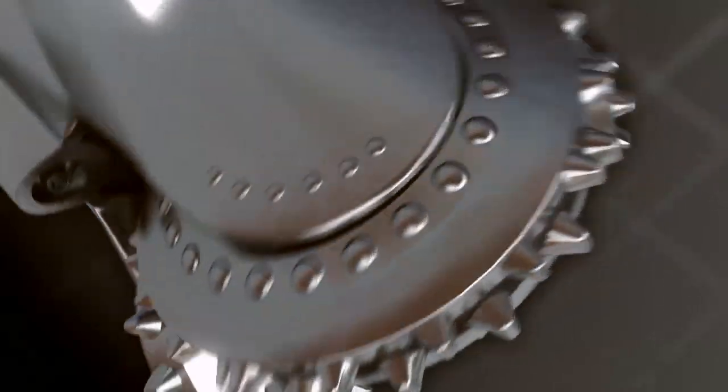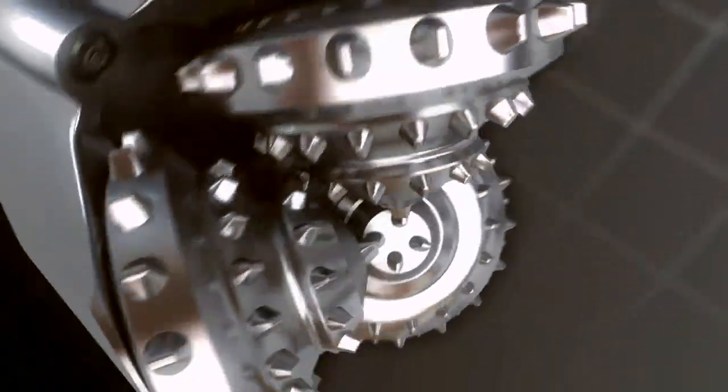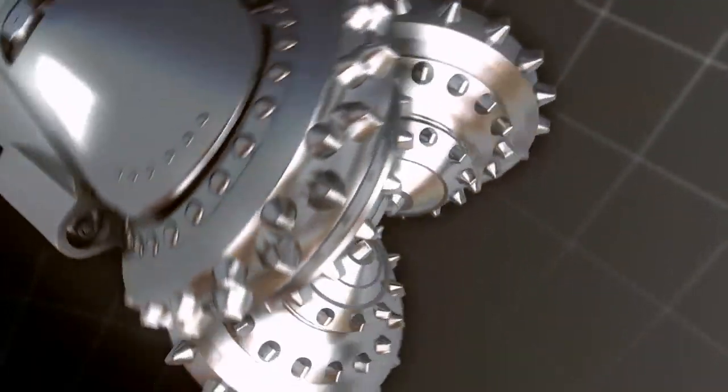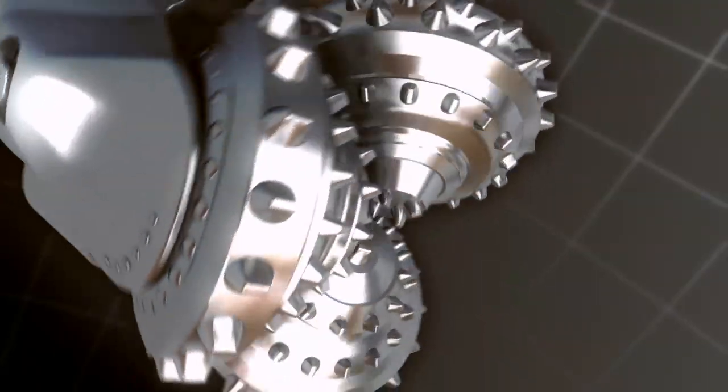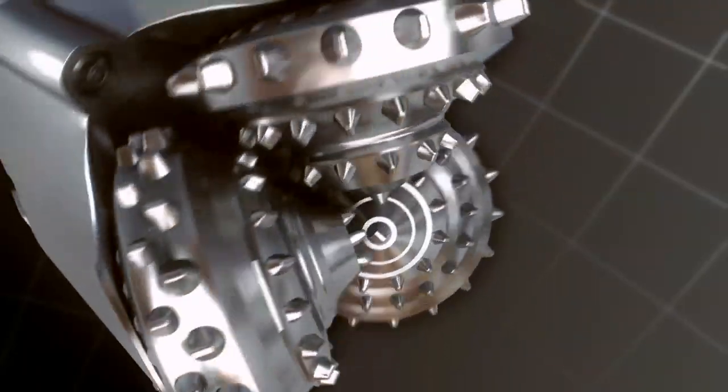Internal bearings allow a roller cone bit to rotate freely. This relieves torque from the drill string as the driller applies forward pressure or weight to the formation.